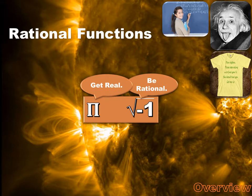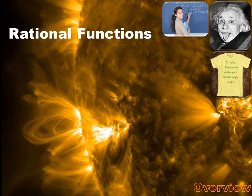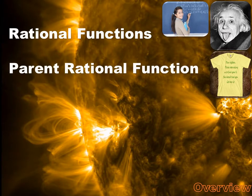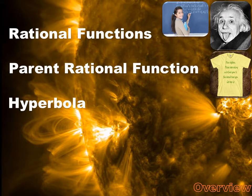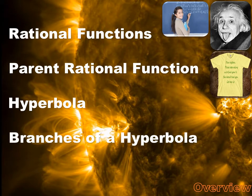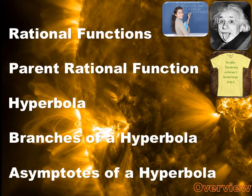Pi is not rational. But today we're going to talk about rational functions, and those are functions that can be written as fractions. We're also going to understand what the parent rational function is, what a hyperbola is, what are the branches of a hyperbola, and what are the asymptotes of a hyperbola.